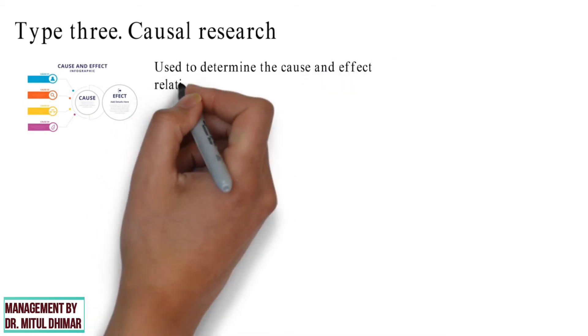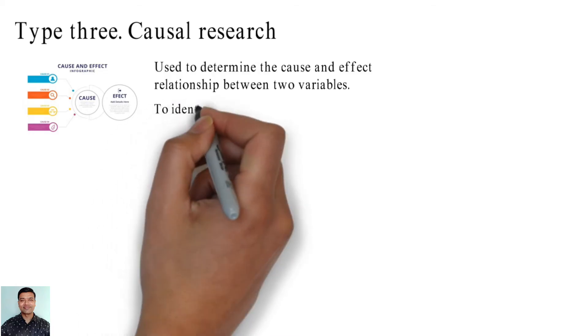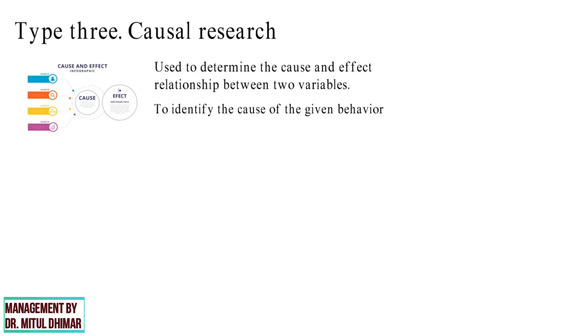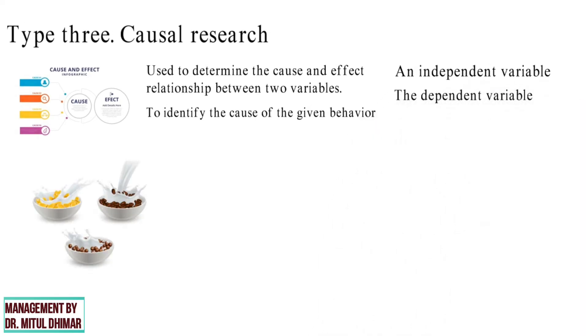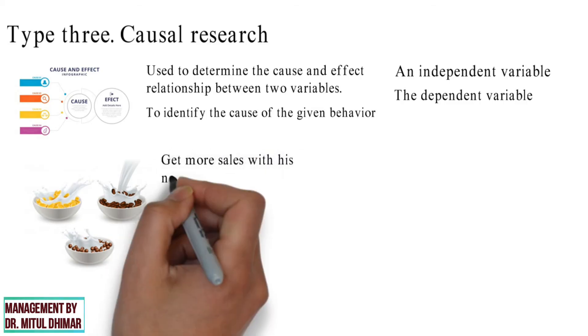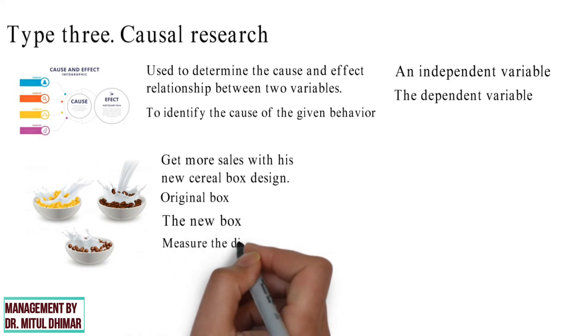Type 3. Causal research. Causal research can be defined as a research method used to determine the cause and effect relationship between two variables. This research is primarily used to identify the cause of the given behavior. Using causal research, we decide what variation take place in an independent variable with the change in the dependent variable. For example, a cereal brand owner wants to know if he will get more sales with his new cereal box design. He would set up an experiment in two separate stores. One will sell the cereal only in its original box and the other with the new box. They would then measure the difference between the sales based on the packaging of the cereal.